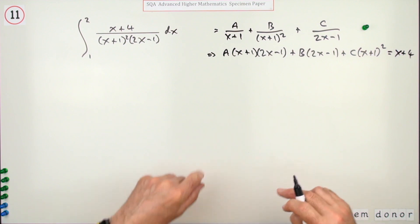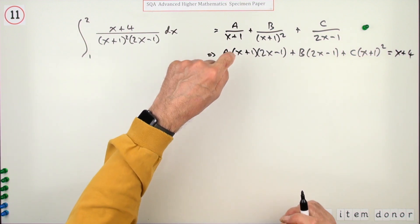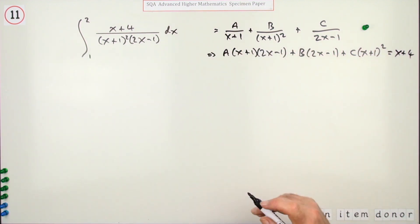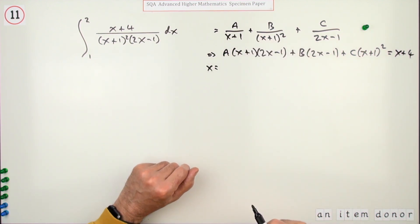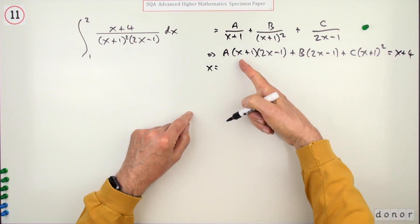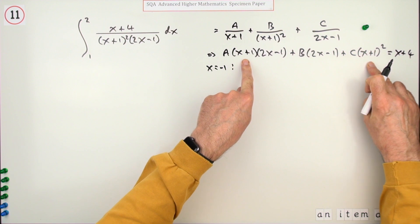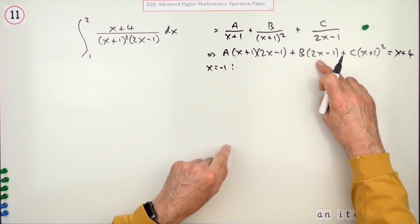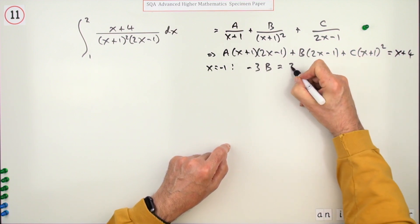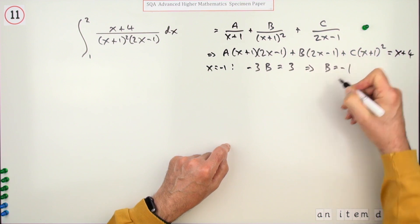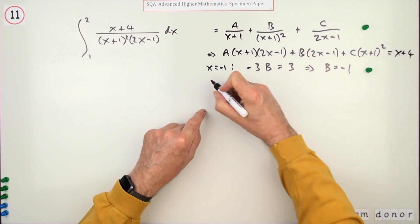The next four marks are for finding A, B, and C. Knock out values because I've got these linear terms. If you use x=-1, that will disappear and that will disappear, and you'll be left with -3B = -1+4 = 3, which means B = -1. So that's worth a mark.